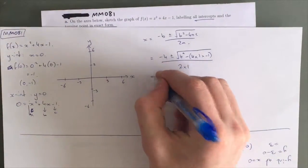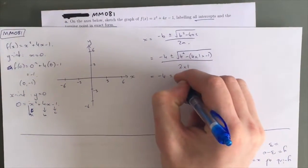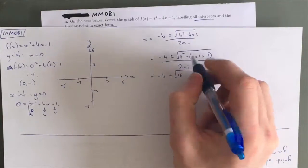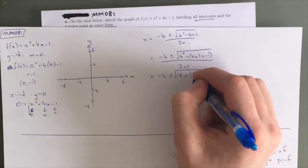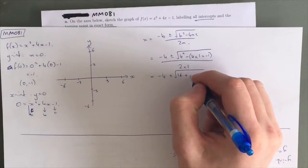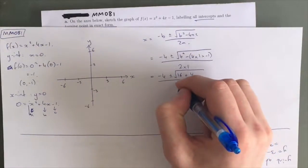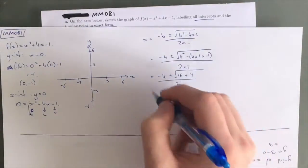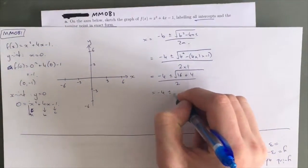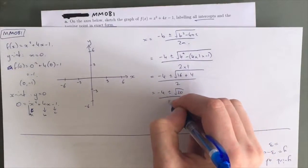From there, we have negative 4 plus minus the square root of 16 plus 4 — because negative 4 times negative 1 gives plus 4 — over 2. Simplifying down, we get negative 4 plus minus the square root of 20, over 2.